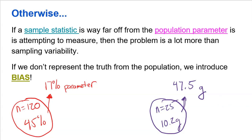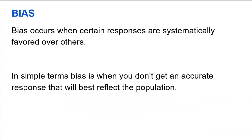So we understand that statistics are not always going to match parameters, but they should be pretty close. If they're close, you're doing a great job. If they're not close, you're introducing bias. Bias occurs when certain responses are systematically favored over others. In simple terms, bias is when you don't get an accurate response that best reflects the population. Sometimes it's your fault, sometimes you just didn't plan for it, but it happened.